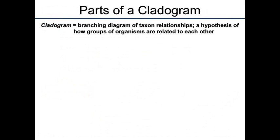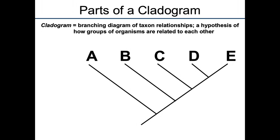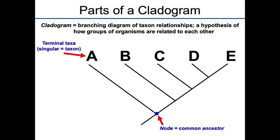A cladogram is a branching diagram of relationships — it is a hypothesis of relationships. This is a cladogram and we have a branching diagram. If we follow those branches all the way down to their bases, this would be a node, and the nodes are going to represent common ancestors.